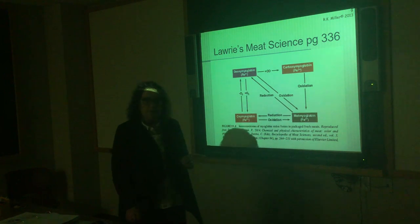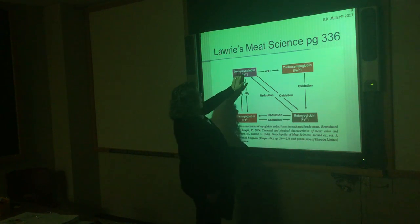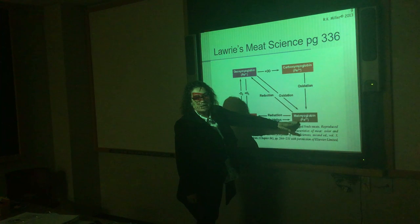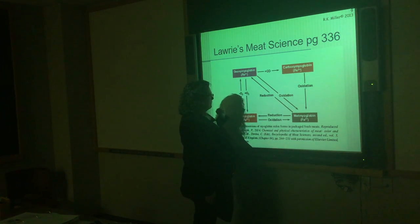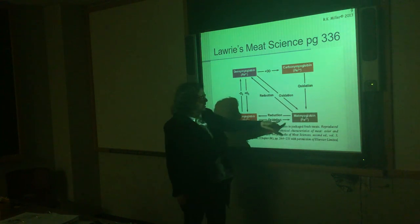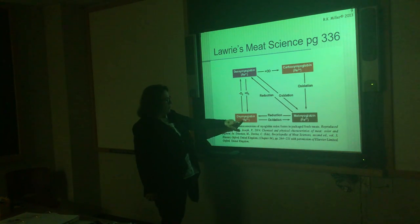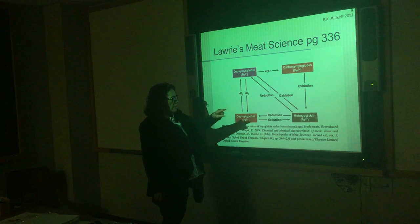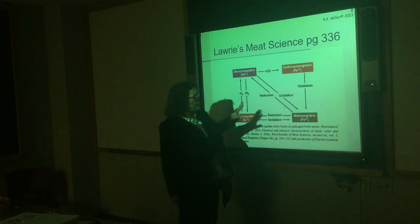When you think about shelf life and you're measuring color in your proposals — if you were in vacuum-packaged product, you were measuring how long it took for deoxymyoglobin to go to metmyoglobin, because metmyoglobin is the end of shelf life. If you were doing modified atmosphere packaging, you were looking at how oxymyoglobin oxidized to metmyoglobin — oxymyoglobin to metmyoglobin requires losing an electron (oxidation). To bring it back requires reduction, where something donates an electron.